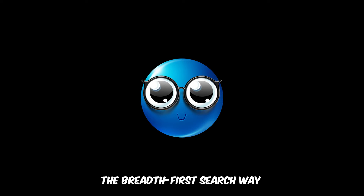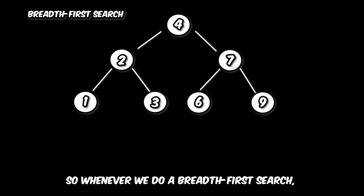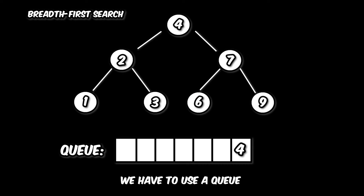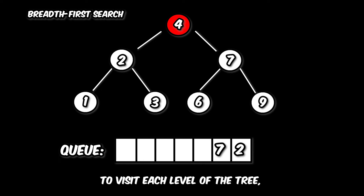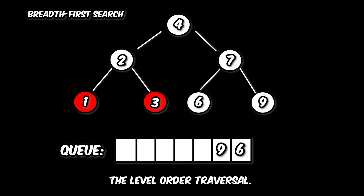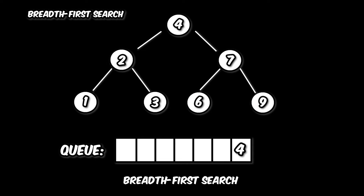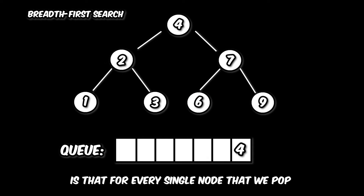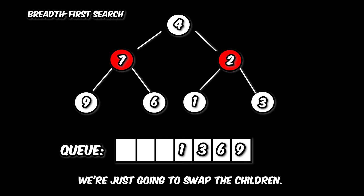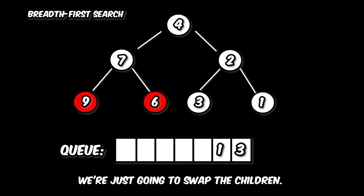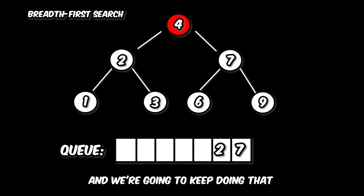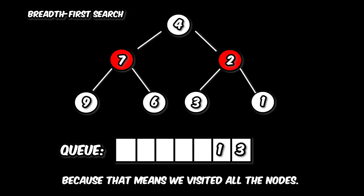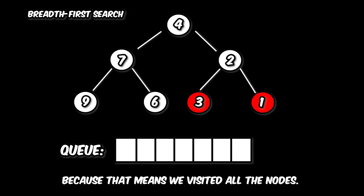Whenever we do a breadth-first search, we have to use a queue, and we use this queue to visit each level of the tree — this is called level order traversal. The way we use breadth-first search for this question is that for every single node that we pop from the queue, we're just going to swap the children, and we're going to keep doing that until the queue is empty, because that means we've visited all the nodes.